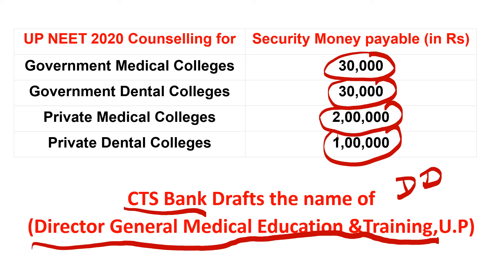Students, take care of your choice filling very carefully, because if you do choice filling incorrectly — meaning if a college is allotted to you and you do not take admission in it — your deposit will not be returned. The security money fee you have paid will not be returned. Keep this in mind. And for verification, bring only original documents — your caste certificate and any other documents.